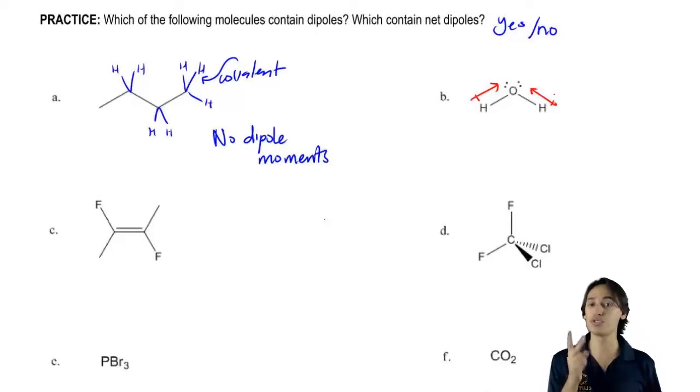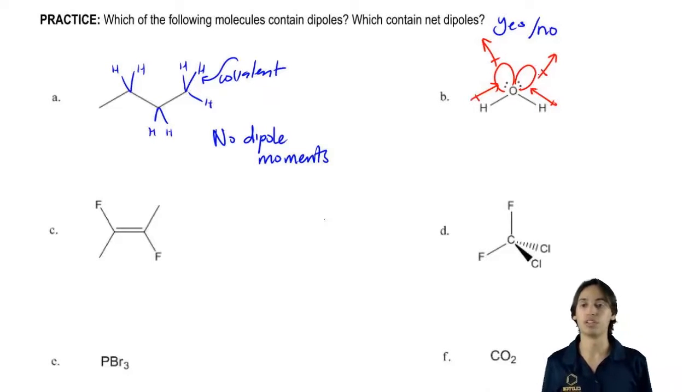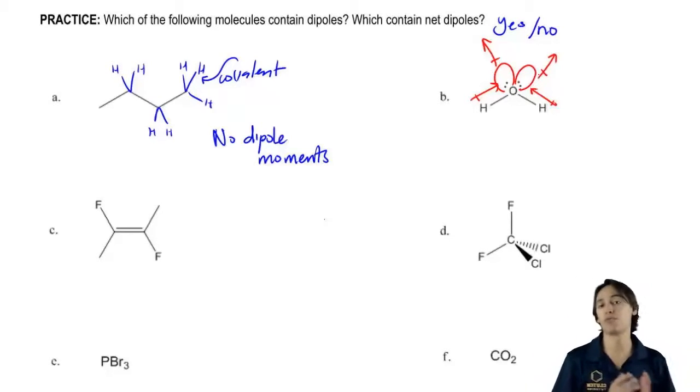But it turns out there's also two more. Remember that I said that lone pairs are also electronegative. So that means both of these are going to pull up as well. Now I've drawn my four dipoles.